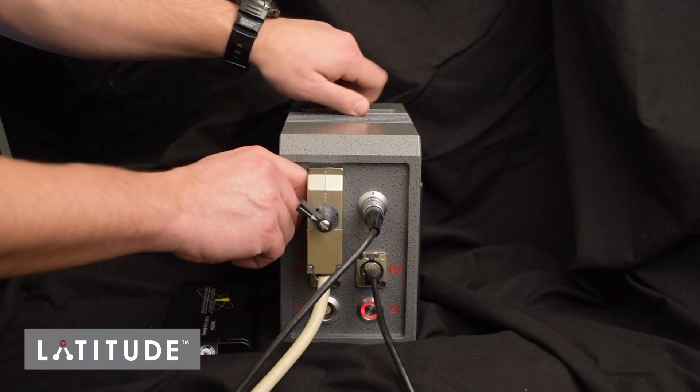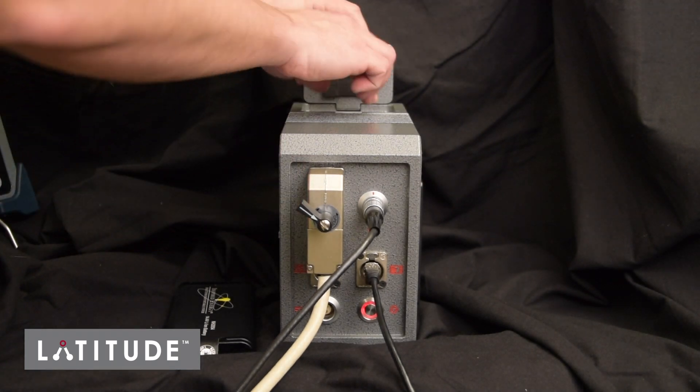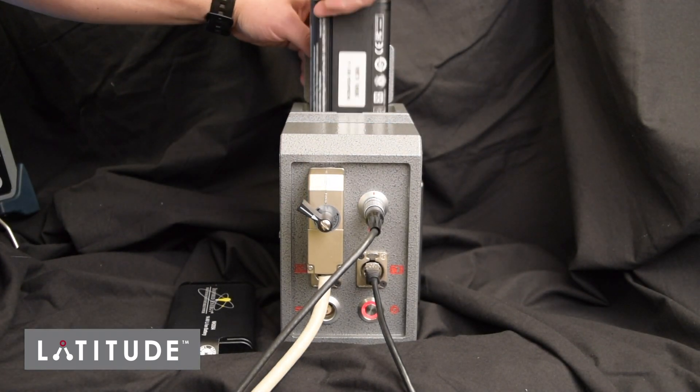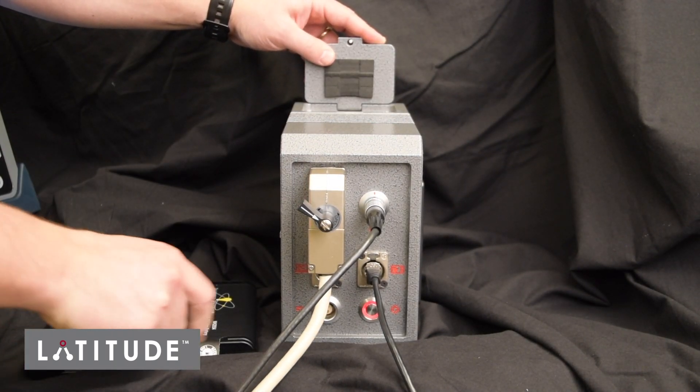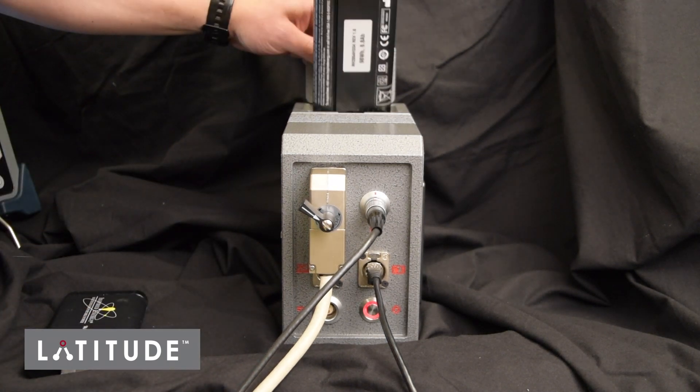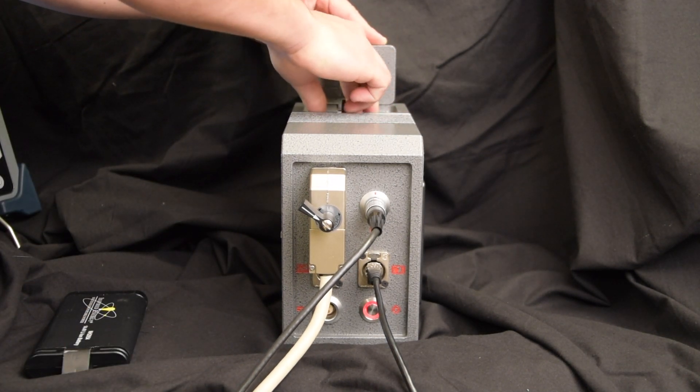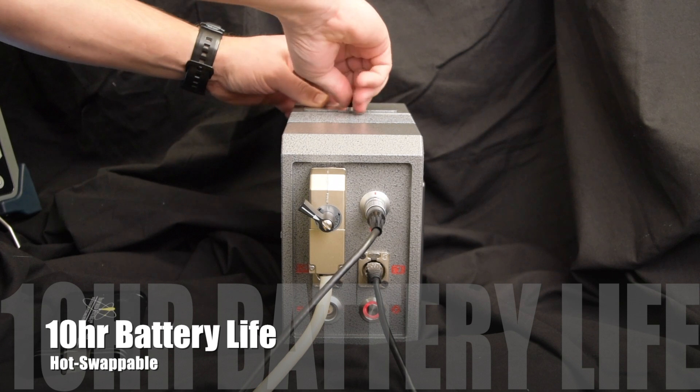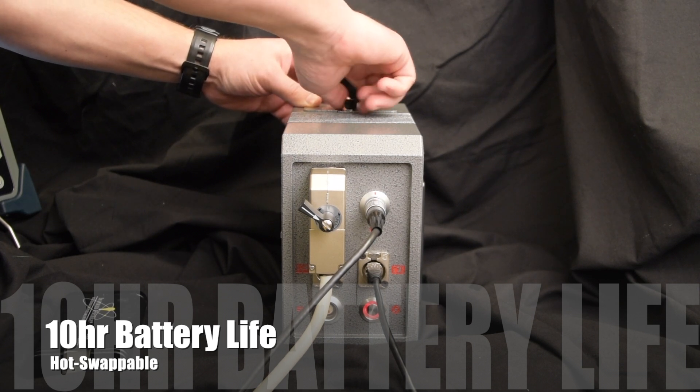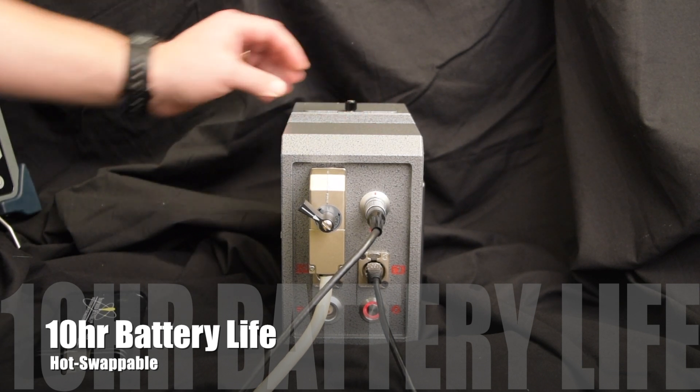And finally, the LATITUDE system is battery powered and will run for approximately 10 hours off a set of fully charged batteries. Also, the batteries are hot swappable, meaning it is possible to replace a low battery with a fully charged battery without powering off the system or interrupting the inspection process.